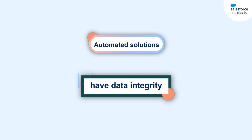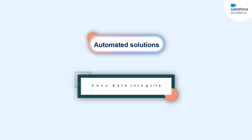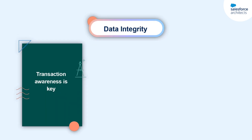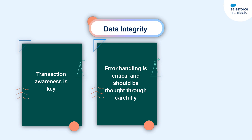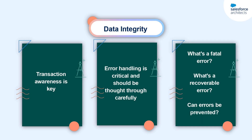Next, an automated solution that is well-architected manages data integrity through proper transaction handling. Transaction awareness is key to building reliable and scalable automations with Salesforce. Error handling is also a key concept for data integrity that should be thought through carefully. What is a fatal error? What about a recoverable error? How can the automation catch and notify the user of errors before attempting to commit changes?